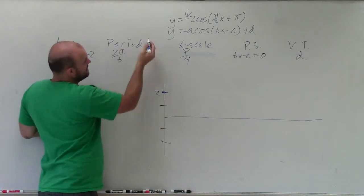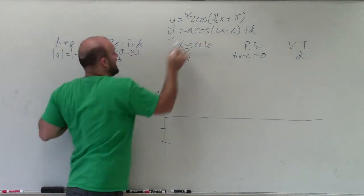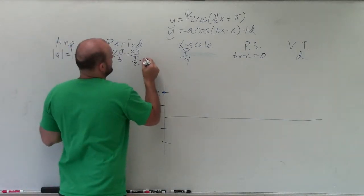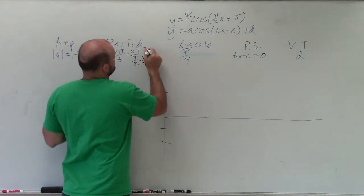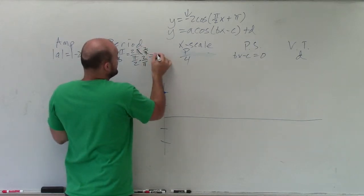Period is 2 pi divided by b. So you can see I have 2 pi divided by b, which is pi halves. So now I've got to multiply by our reciprocal. That equals 4. So my period equals 4.